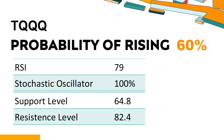The current stochastic oscillator of TQQQ is 100%. When the stochastic oscillator rises above the 80 level, it is usually considered overbought, indicating that the stock may be due for a price pullback. An overbought condition occurs when a stock's price rises too fast and too high in a short period of time and can be a sign that buying pressure has exhausted.